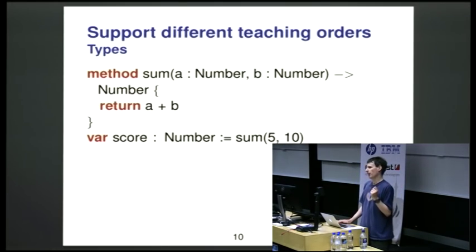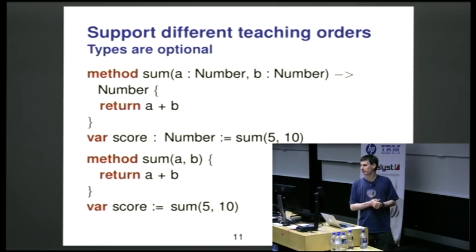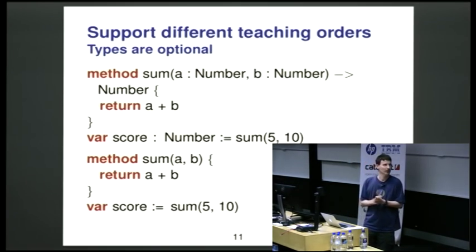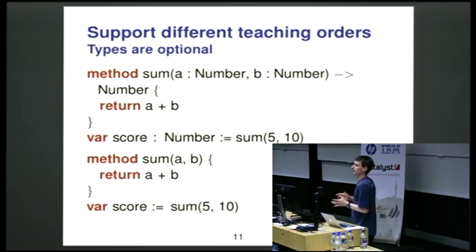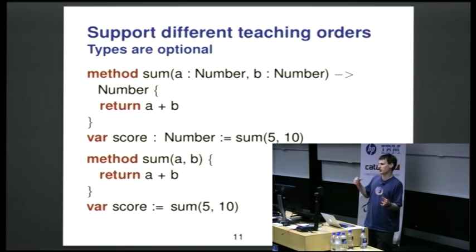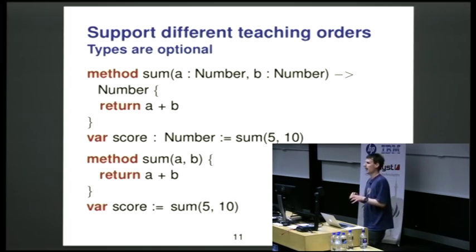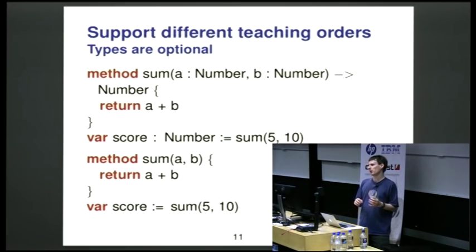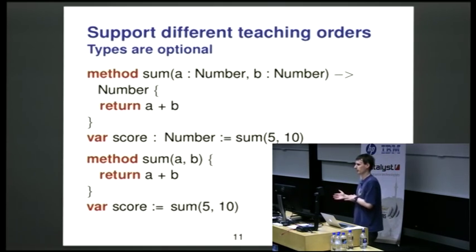Types are optional. Some people like to teach with types, some without, and there's little evidence to suggest one is better than the other. Grace is gradually typed — you can have types in some places and not others. When an object is passed between statically typed and dynamically typed code, it's dynamically checked at runtime to ensure it's the right type, so statically typed code can rely on its static assumptions. If it's wrong, you get an error.